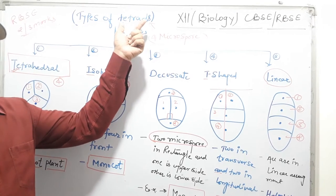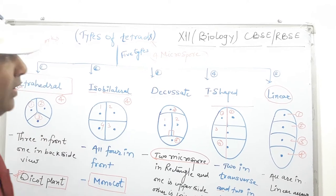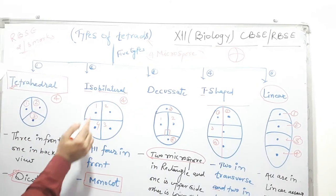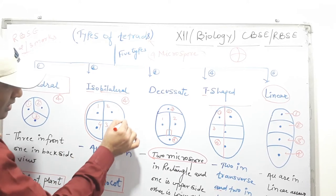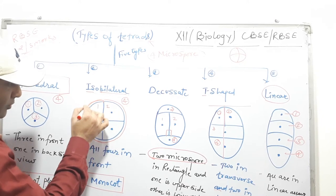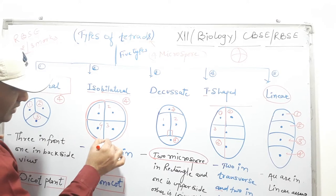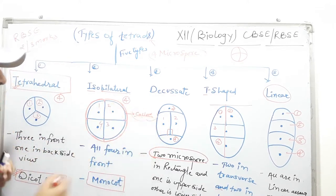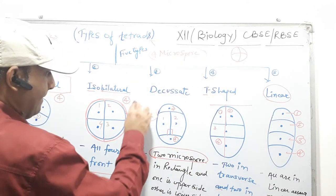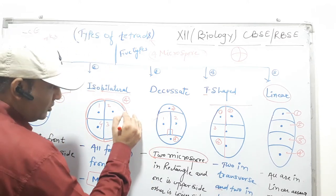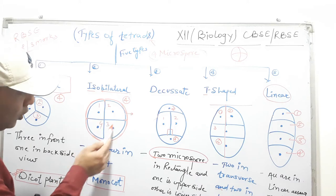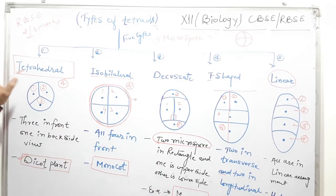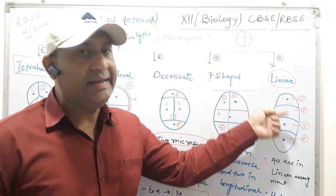To recap: tetrad means the joined four microspores produced during microsporogenesis, held together in a joining membrane. This membrane is called callus. The callus membrane is dissociated by the callase enzyme, separating the microspores during the development of pollen grains. The five types of tetrad are: tetrahedral, isobilateral, decussate, T-shaped, and linear.